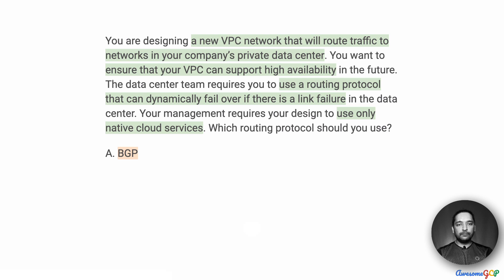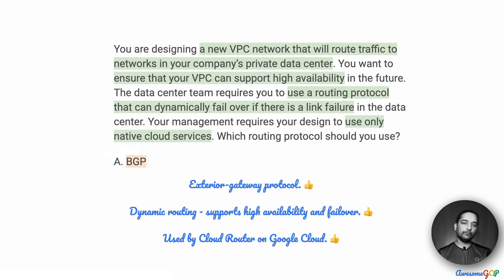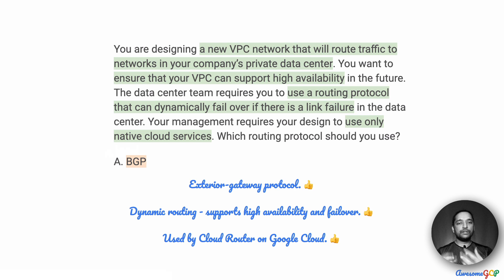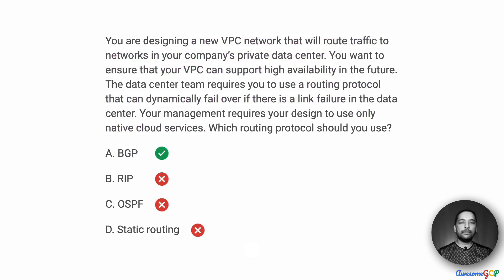The only one left is option A — BGP, the border gateway protocol. This is an exterior gateway protocol. It supports dynamic routing, which means it allows networks to be discovered as and when they change. It also supports high availability and failover because of its dynamic routing. Moreover, as the question requires native cloud services, Cloud Router within Google Cloud uses the BGP protocol — therefore this is the correct solution for this requirement.